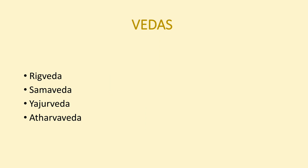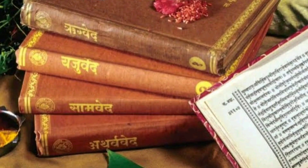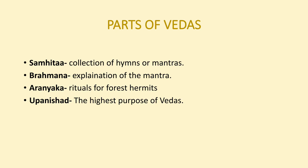There are four Vedas: the Rig Veda, the Sama Veda, the Yajur Veda, and the Atharva Veda. There are four parts of the Vedas. The Samhitas contain collections of hymns and mantras. The Brahmanas deal with the explanation of the mantras. The Aranyakas contain the rituals of forest hermits, and the Upanishads contain the highest purpose of the Vedas.